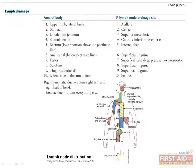Certain body region and lymph node associations are particularly important to understand. The upper limb and lateral breast drain to the axillary nodes. This is important because of where most breast cancers occur — the upper outer quadrant of the breast — and hence why sentinel node biopsy typically involves interrogation of the axillary lymph nodes when staging breast cancer. A good overall concept to keep in mind is that the right lymphatic duct receives drainage from the right arm and right half of the head, while the thoracic duct drains everything else.